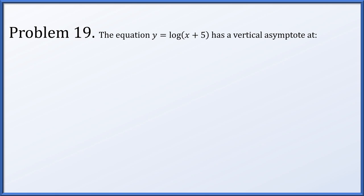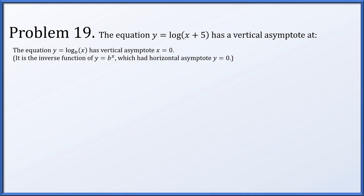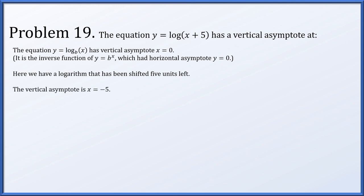For problem 19, the equation y equals log of x plus 5 has a vertical asymptote where? In general, y equals log base b of x has a vertical asymptote at x equals 0. However, this function has been shifted 5 units to the left, so instead of the vertical asymptote being at x equals 0, it's at x equals negative 5.